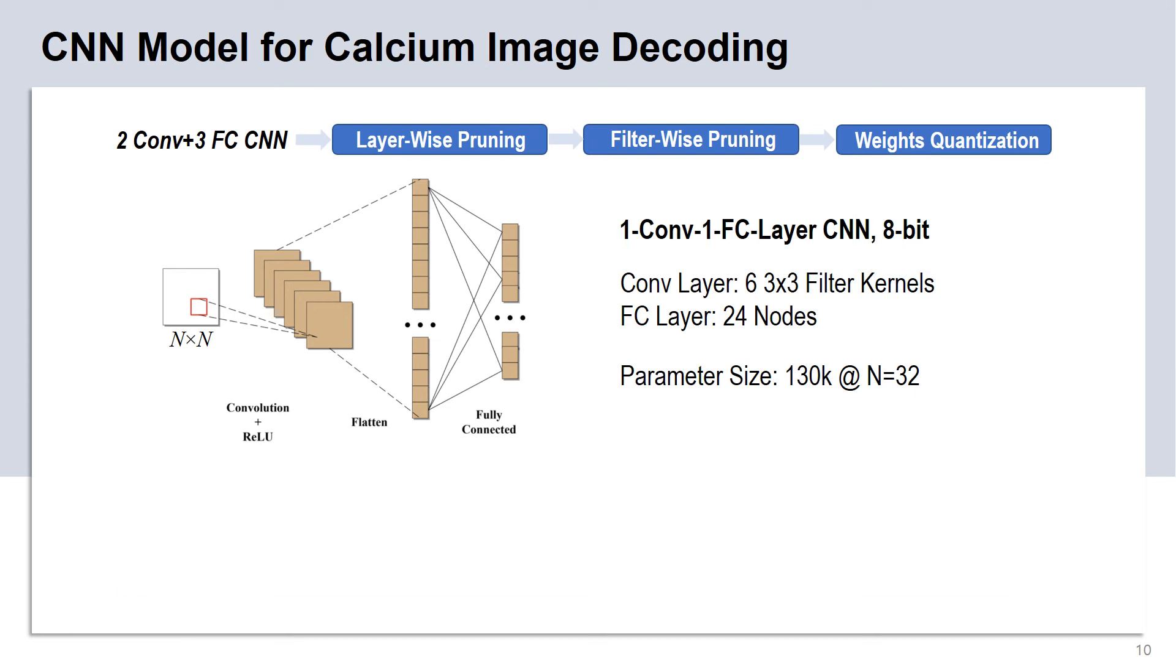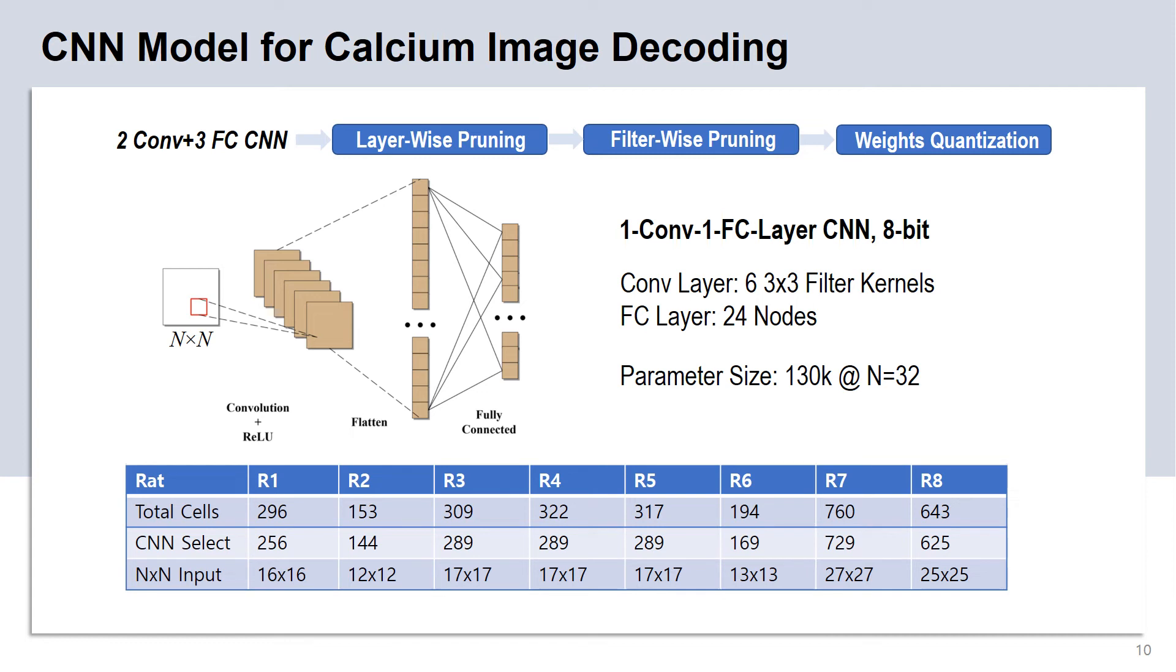In real application, the input dimension depends on the number of cells or tiles, usually place cells or place tiles, involved in the decoding. Different rats may have different number of place cells detected. This table shows a variety of number of cells detected and selected for decoding across rats. It also shows the corresponding input sizes of the trace image for different rats.